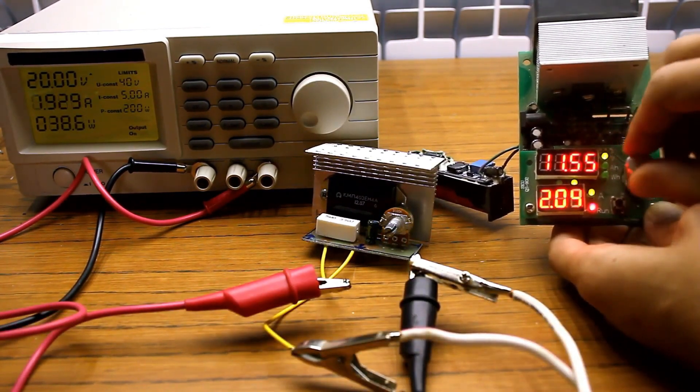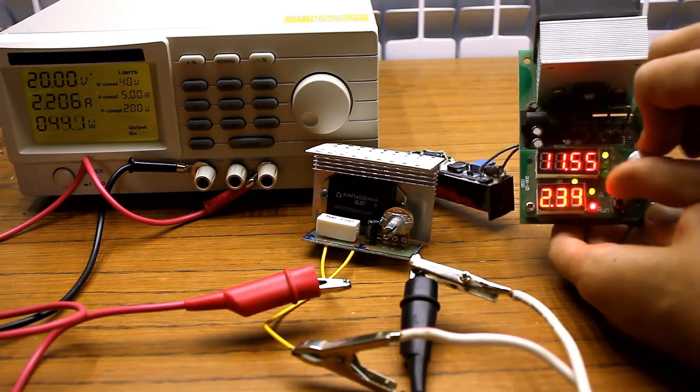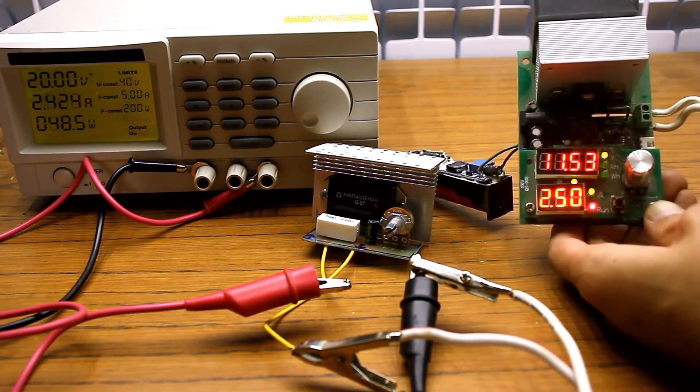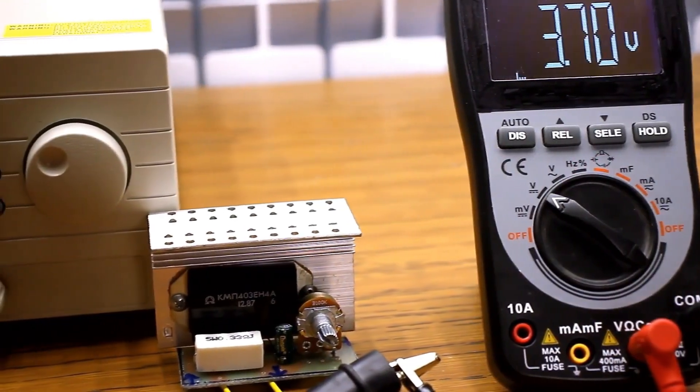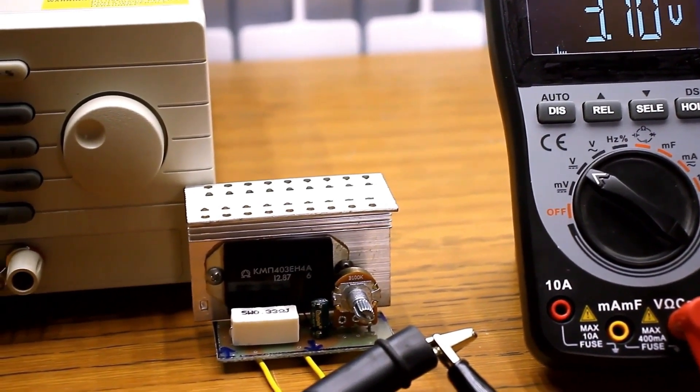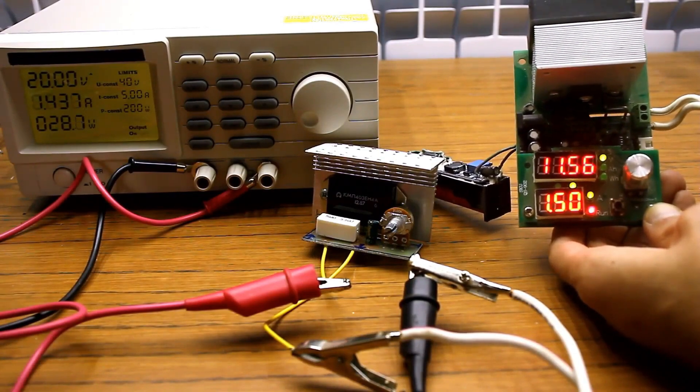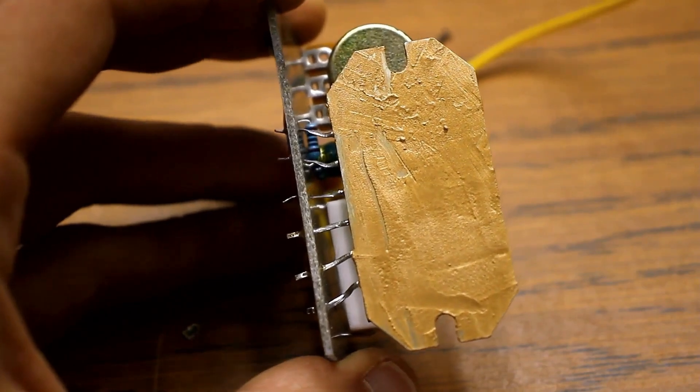I remind you that the declared dissipated power with the heatsink is 20 watts. During the measurements, we loaded it 50% more than the permissible value, but the chip handles it calmly. Calculating the efficiency doesn't make sense. In all linear circuits, it depends on the difference between the input and output voltage and the output current. The efficiency here is as expected for a linear regulator.